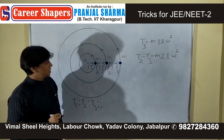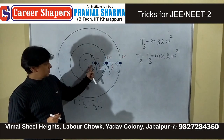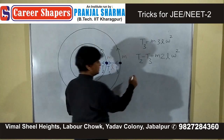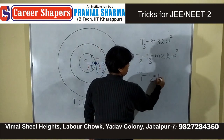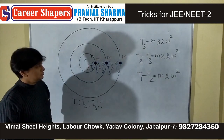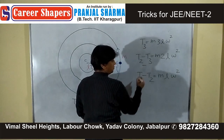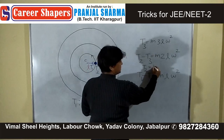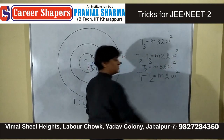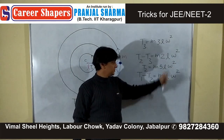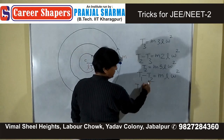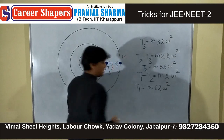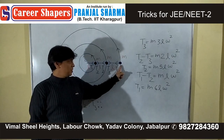For the first rope, tension is T1 and T2, so the net centripetal force is T1 minus T2, which equals m times l times omega squared. T3 is known; T2 comes out as m times 2l times omega squared plus T3, giving m times 5l times omega squared. Then T1 equals m times 6l times omega squared.